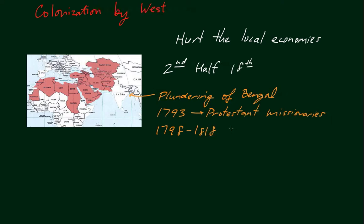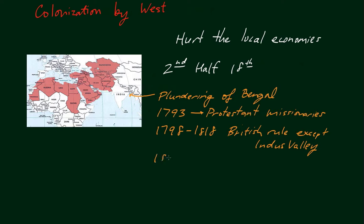From about 1798 until 1818, basically through treaties or military conquest, British rule was pretty much established everywhere except the Indus Valley. Then from 1843 to 1849, the Indus Valley was subdued, and at that point the British had really taken over all of India.